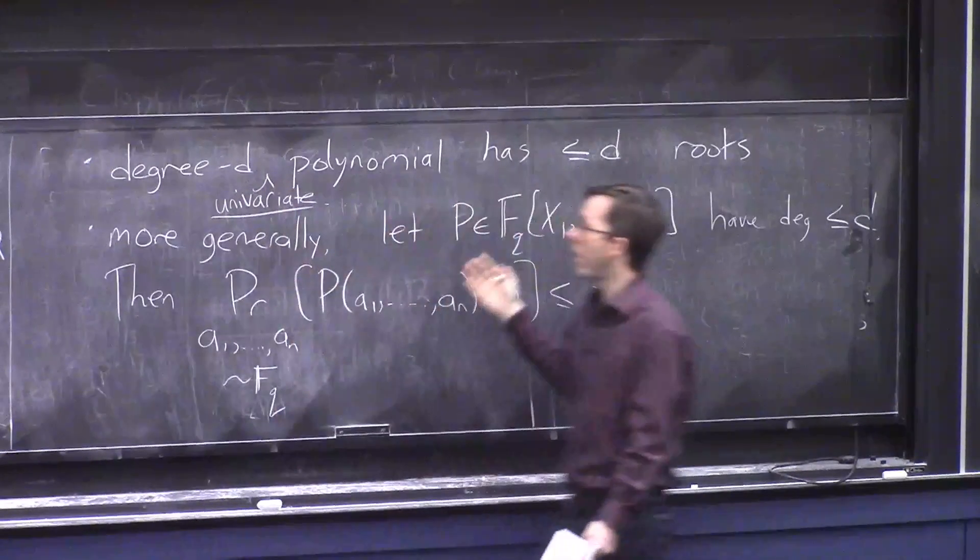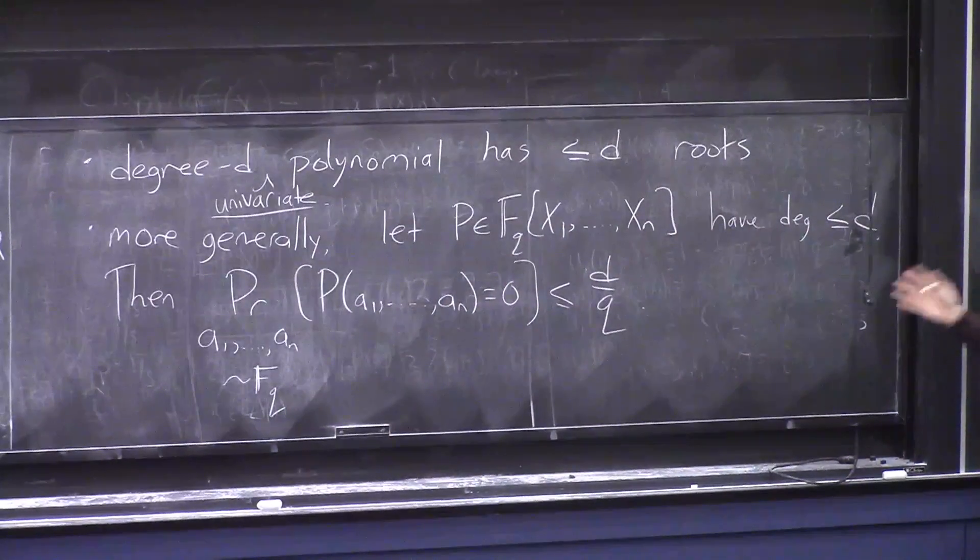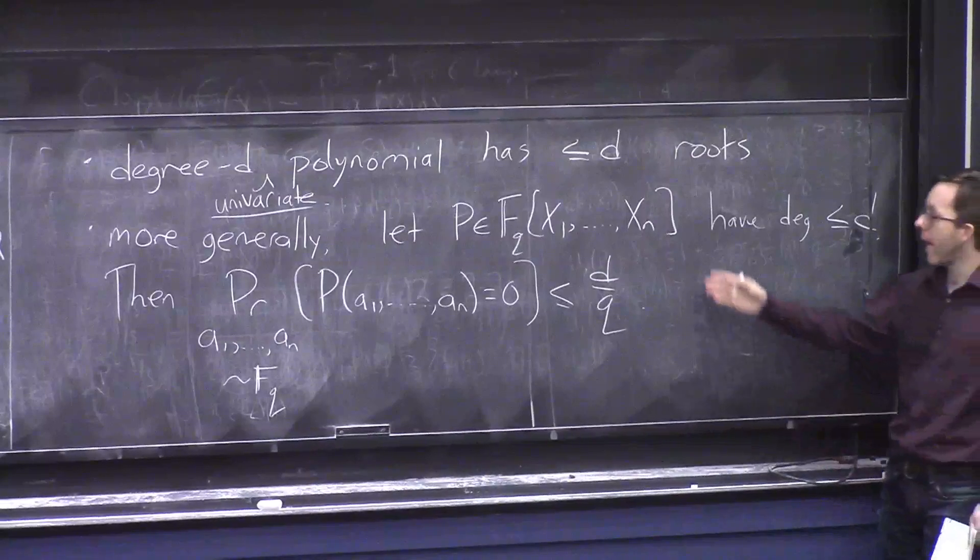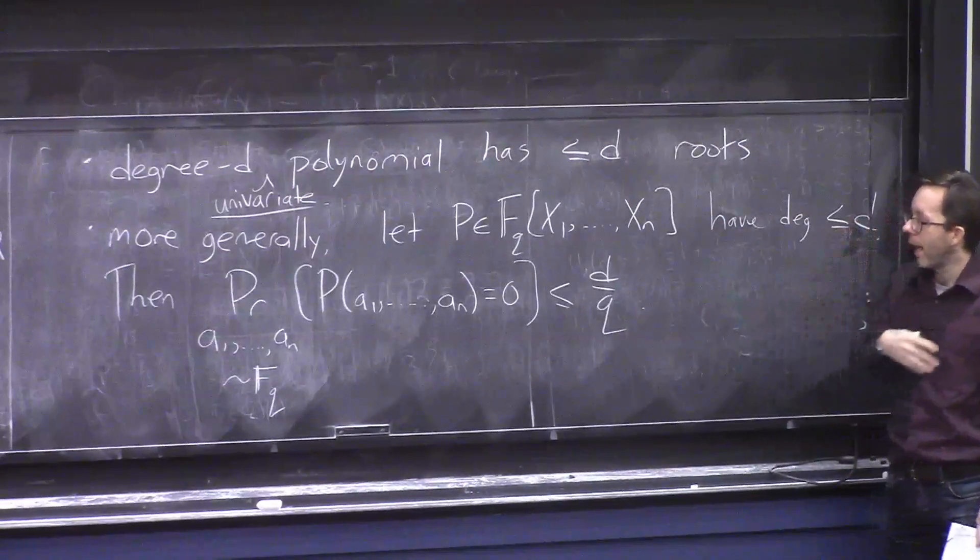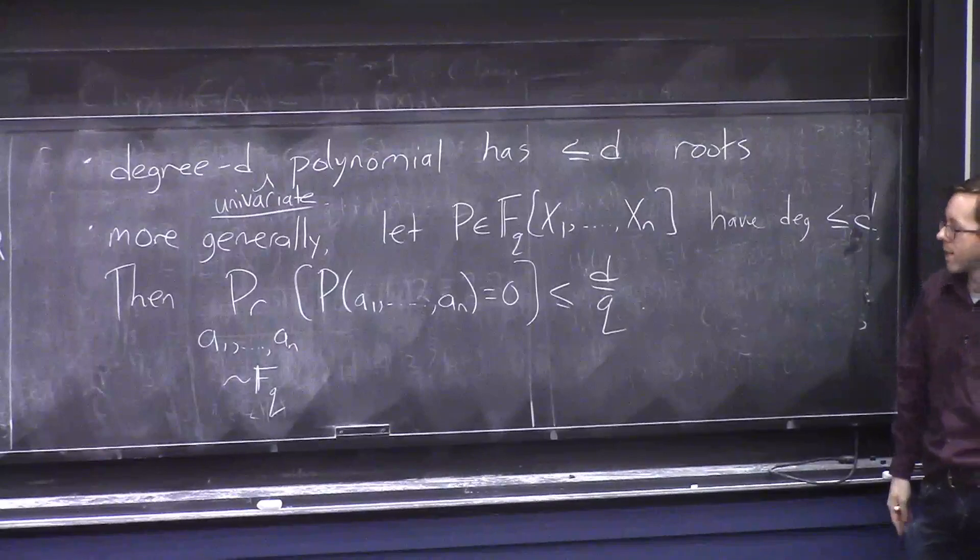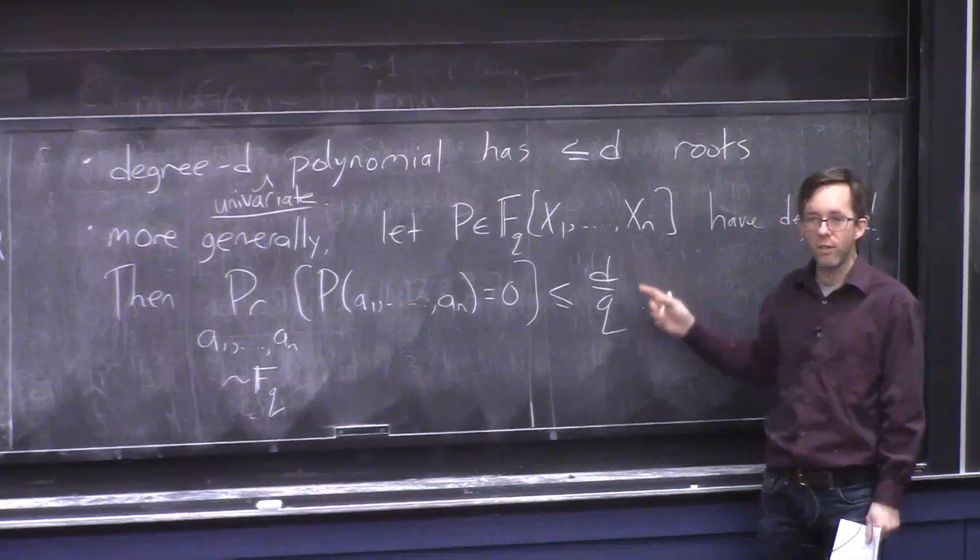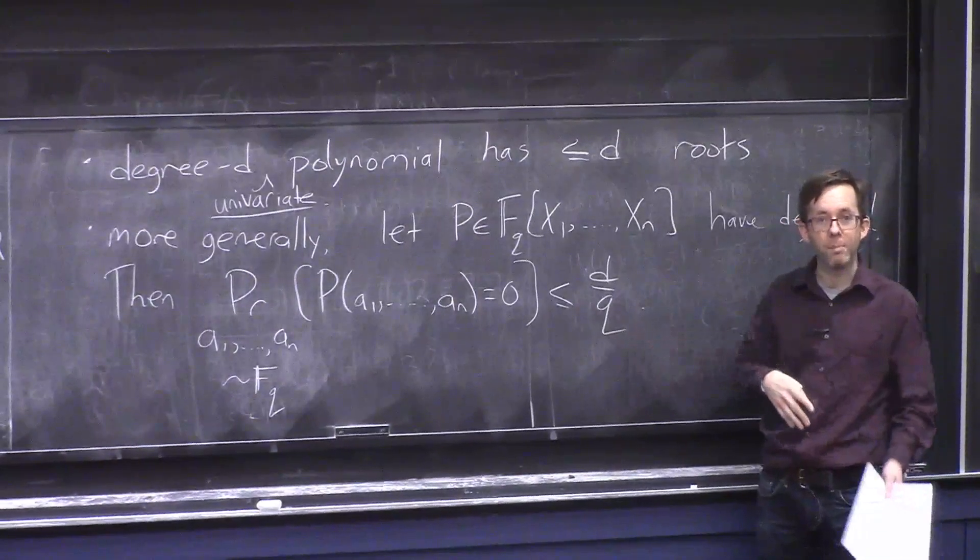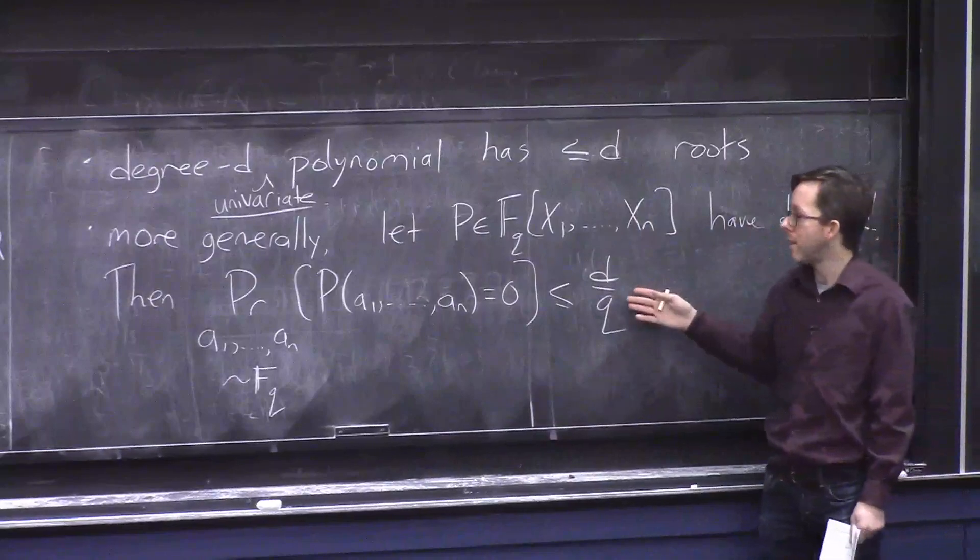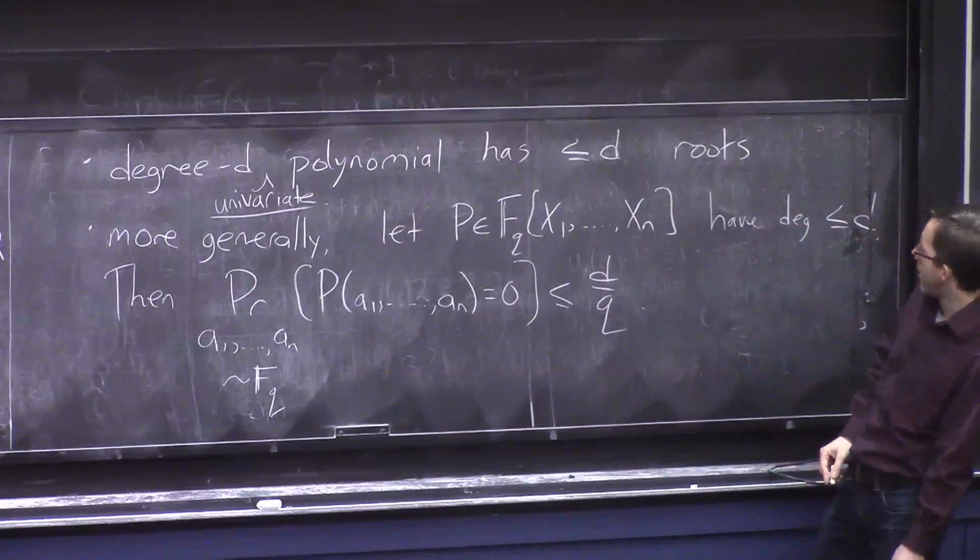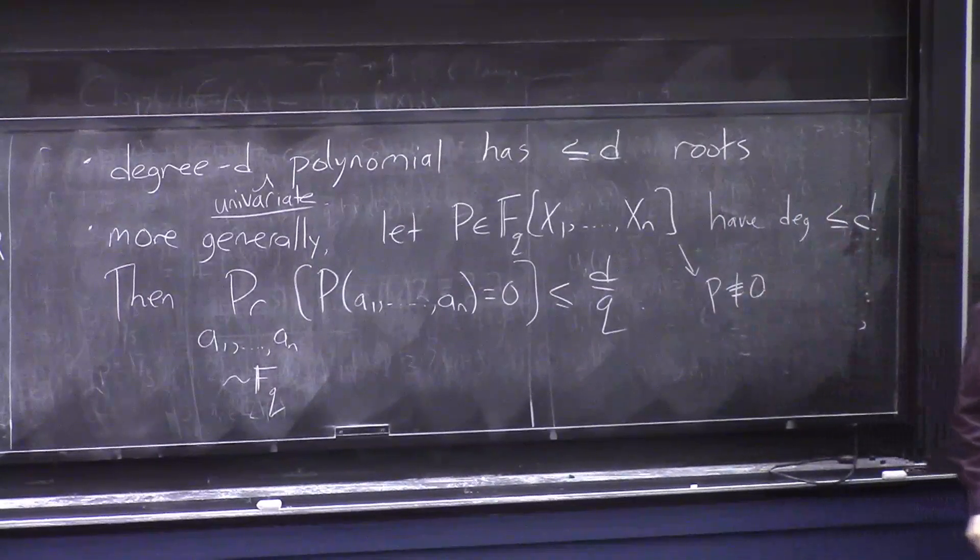And there's also a generalization of this fact for polynomials that have more than one variable, which is called the Schwarz-Zippel lemma. And it's basically this. If you have a multivariable polynomial, and it has degree at most d, and you pick random values for each of the inputs, then it's unlikely to output zero. And what does unlikely mean? It means probably at most d over q, where q is the size of the field. So if it's a big field, so you have lots of choices for these different a's, then the polynomial is unlikely to output zero. I should also add the words here: P should not be the all zeroes polynomial. Then it's very likely to output zero.